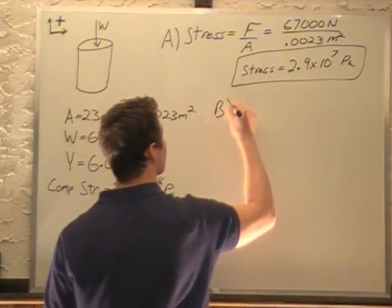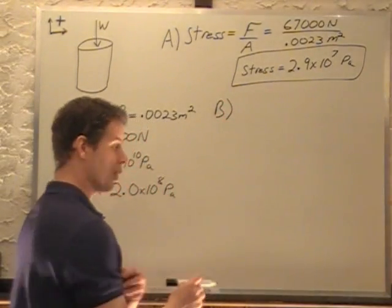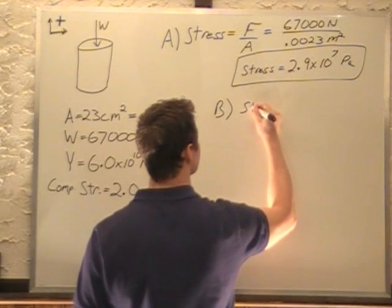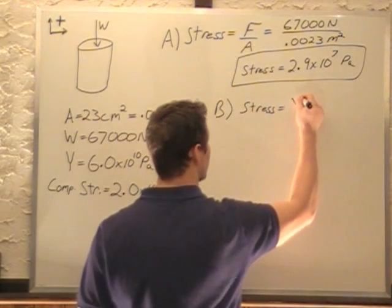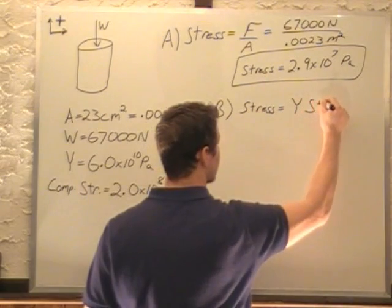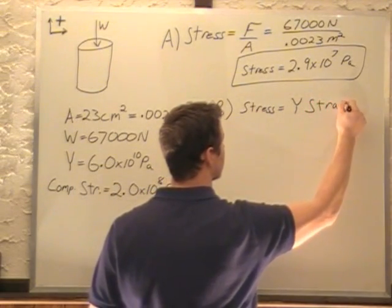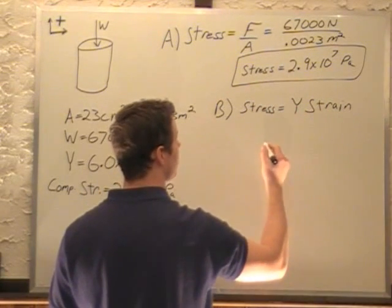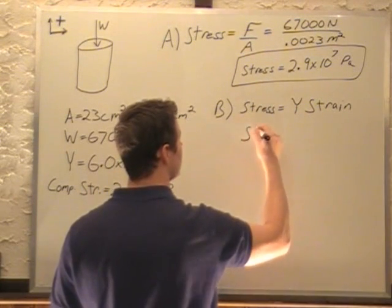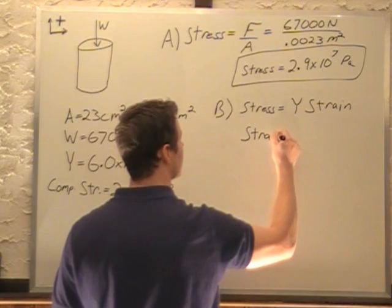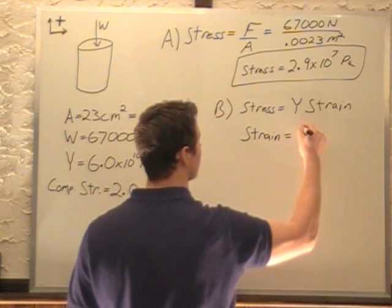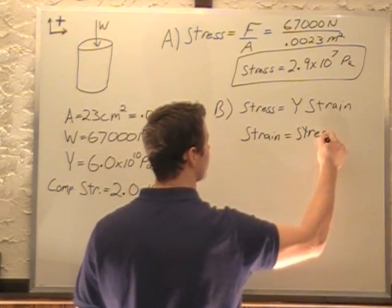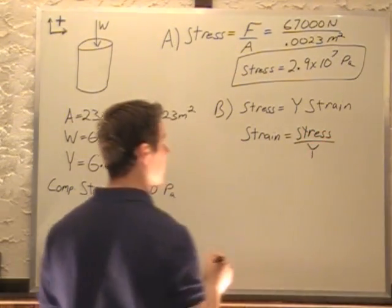Now B asks us what is the strain in the column. Now we know that stress is equal to the Young's modulus times the strain. So to get the strain we just have to divide the stress by the Young's modulus. So strain is equal to, dividing that over gives us stress divided by the Young's modulus.